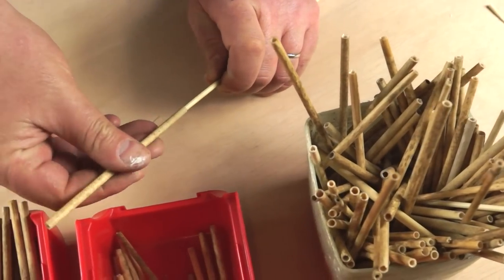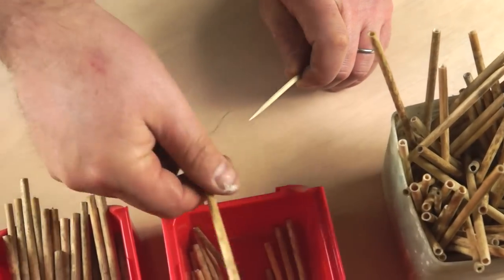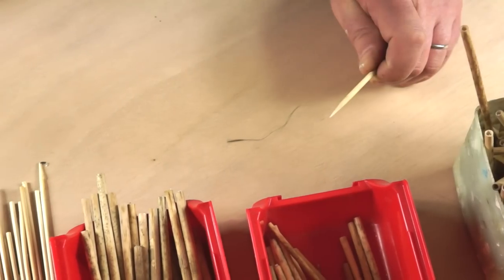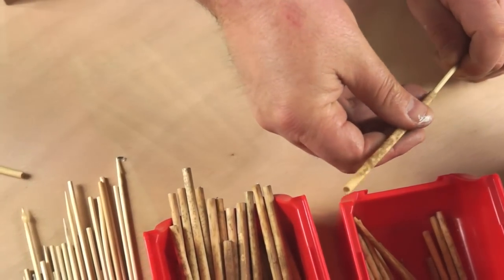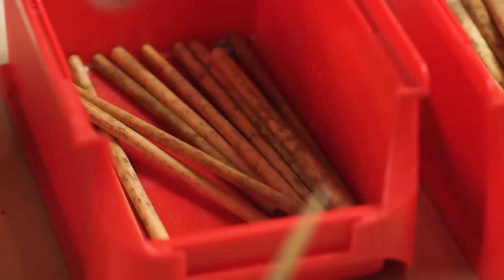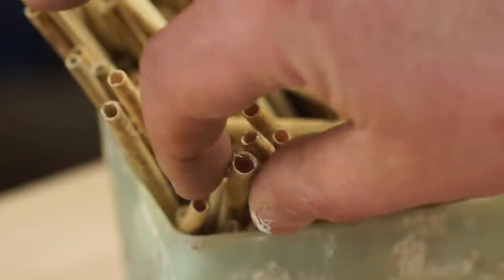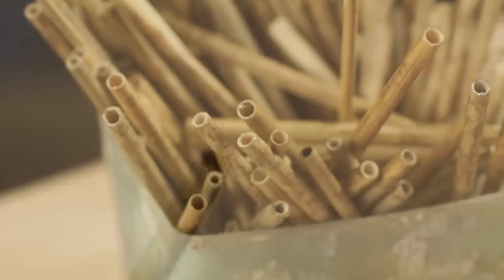I can then select some smaller stems and test them for a fit on a bamboo skewer. The larger reeds that form the main part of the body can then be test fitted over these smaller reeds.